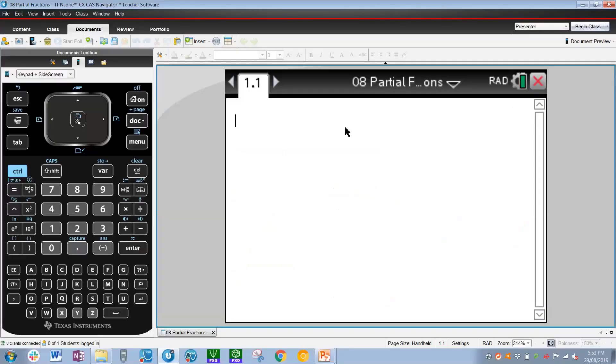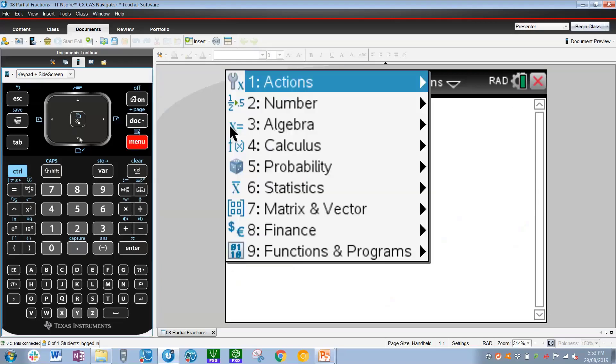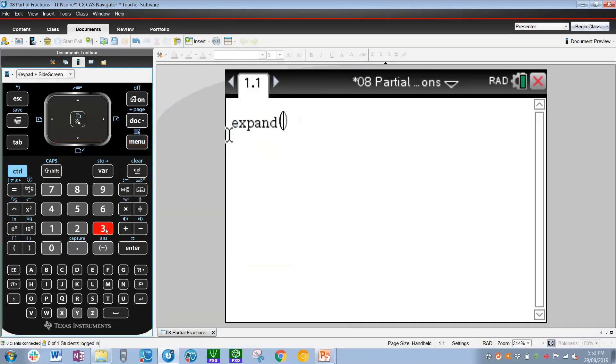On our calculators, the best way to do partial fractions is to simply use the expand command. To use expand, we're going to use menu, then algebra number 3, and then expand is number 3 again.